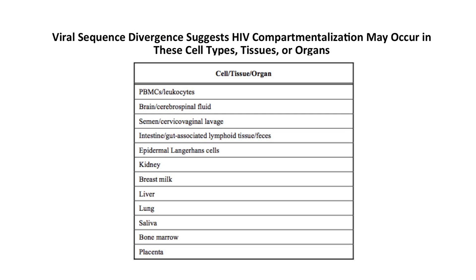Viral sequence divergence suggests HIV compartmentalization may occur in these cell types, tissues, or organs. They include peripheral blood mononuclear cells or leukocytes, brain or cerebrospinal fluid, semen, cervical vaginal lavage, intestine, gut-associated lymphoid tissue or feces, epidermal Langerhans cells, kidney, breast milk, liver, lung, saliva, bone marrow, and the placenta.